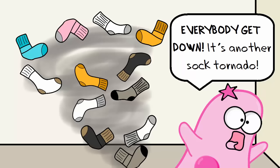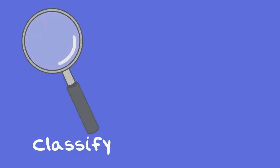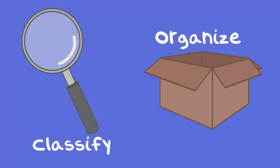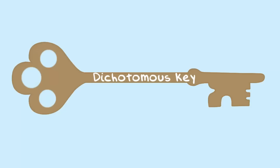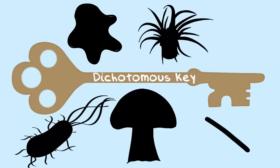Scientists are often trying to classify and organize different organisms based on shared characteristics. It's very important to have tools to differentiate among different organisms. In this particular clip, we are going to use a tool called a dichotomous key to identify five different organisms that each happen to be from five different taxonomic groups.